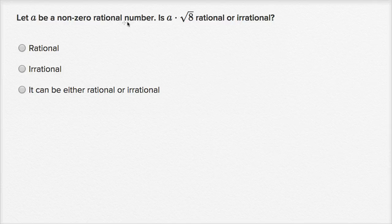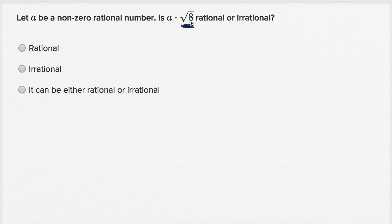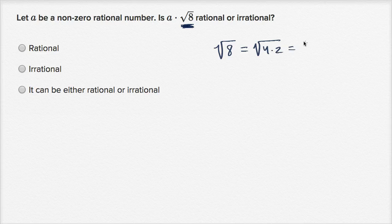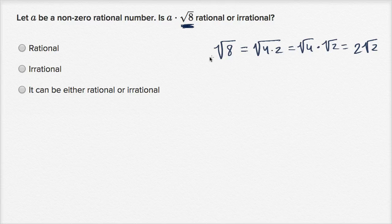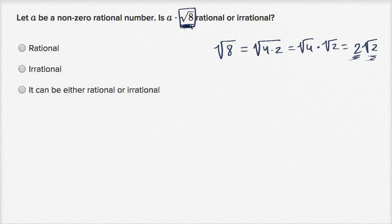Let A be a non-zero rational number. Is A times the square root of eight rational or irrational? The key here is that the square root of eight is an irrational number. Square root of eight equals the square root of four times two, which equals two square roots of two. If you multiply a rational number times an irrational number, you are going to get an irrational. So this is going to be, for sure, irrational.